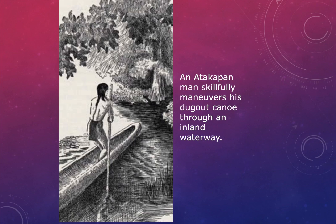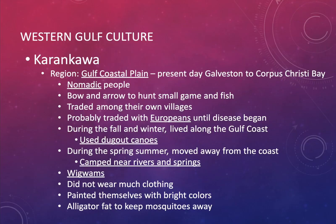The Atakapa society lived a little longer than the next group because they were a bit more advanced. The next culture — one of the most fascinating — is called the Western Gulf culture, which includes two groups: the Karankawa and the Coahuiltecan.